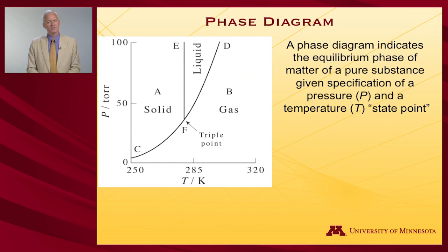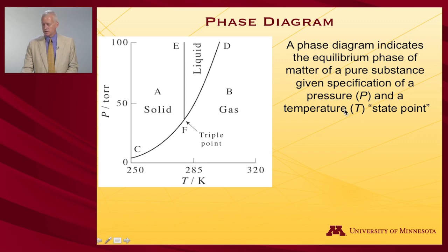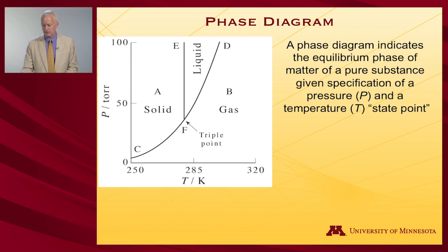What you're looking at here is a phase diagram, and it indicates the equilibrium phase of matter of a pure substance. Given the specification of a pressure — on the ordinate — and temperature — on the abscissa — the combination of temperature and pressure is called a state point. We can triangulate a given temperature and pressure, and if it's 260 K and 50 Torr, we would predict that this substance is a solid.